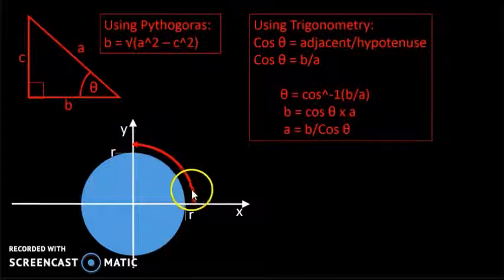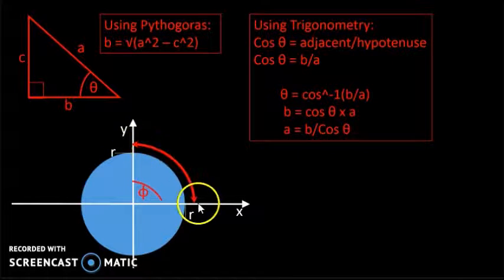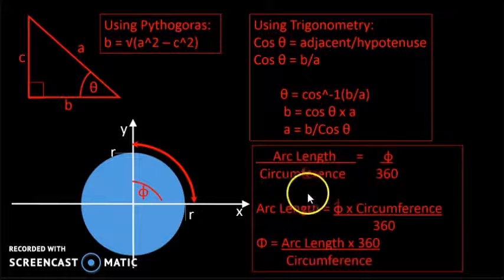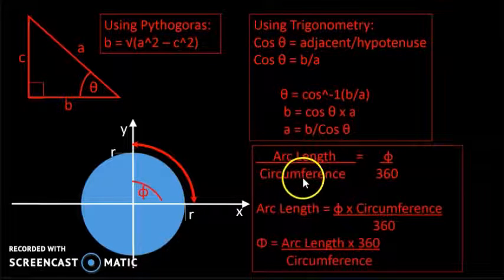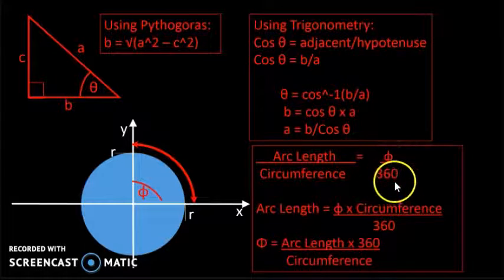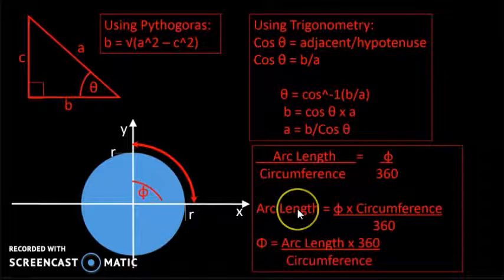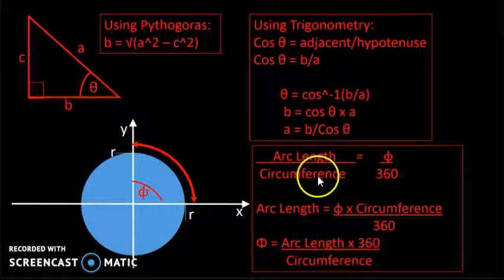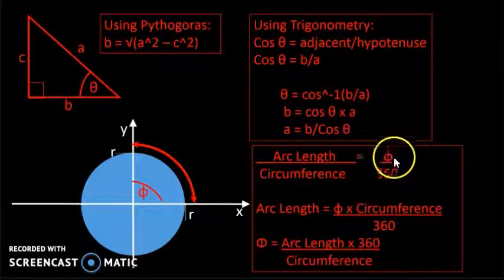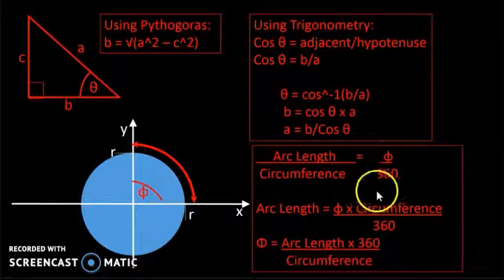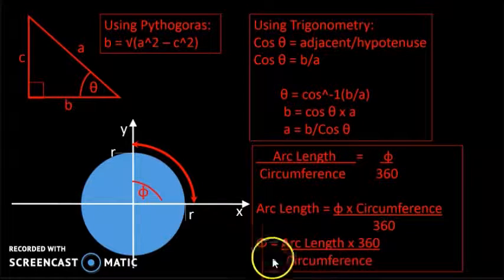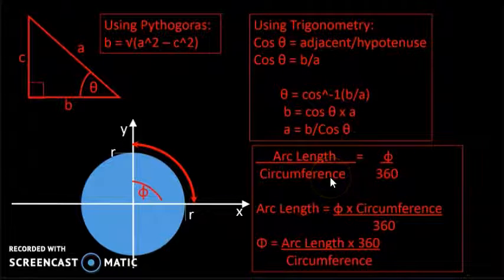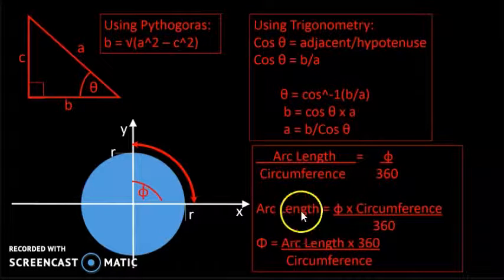If we have an arc length, that arc creates an angle phi. We can use the expression: arc length divided by circumference equals phi divided by 360. This allows us to find either the arc length or the angle phi, depending on which values are known and which is unknown.